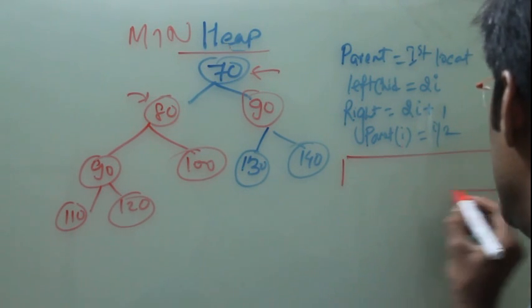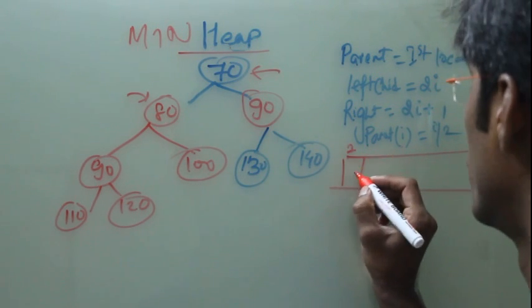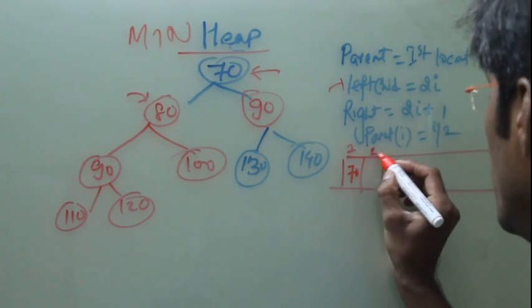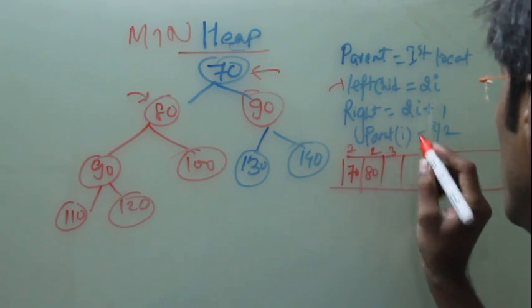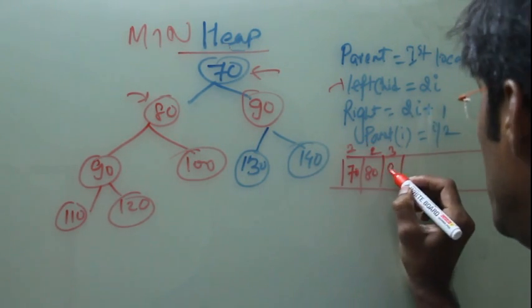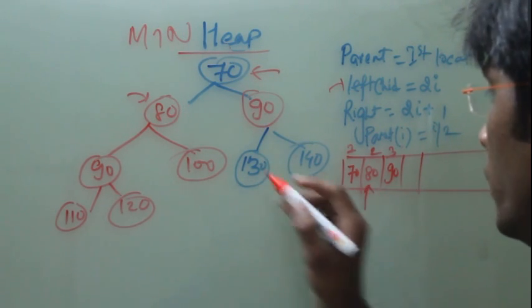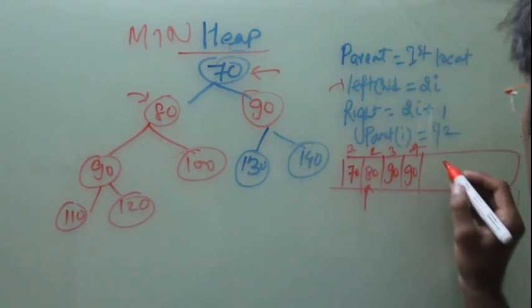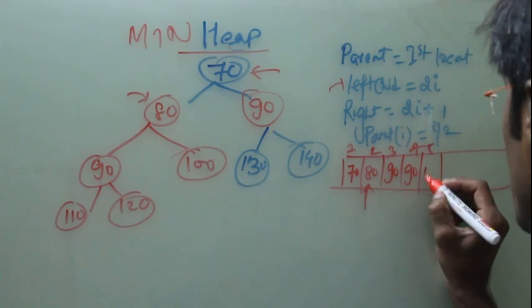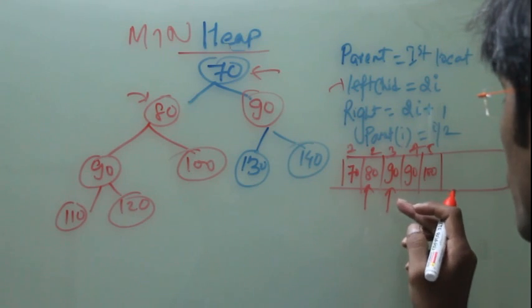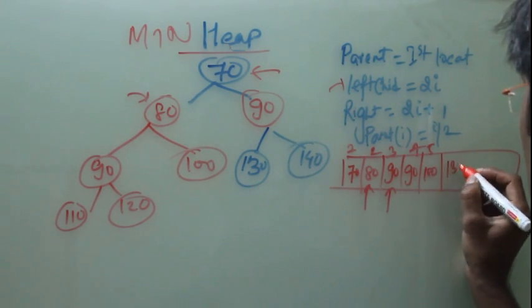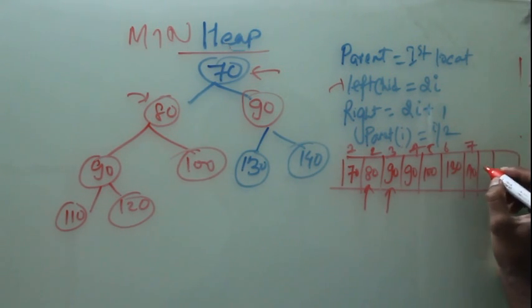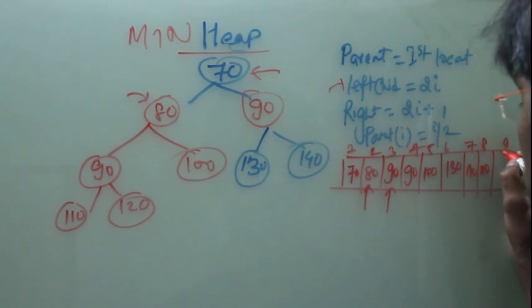So if you draw an array, my first element will be stored as 70. Then I will move to left child, it will be 2 into i, that is 80. Then right child 2 into i plus 1, that is 3, which is 90. Then this will be my next parent. For 80, the left child is the 4th element which is 90, and the 5th element is 100. Now I will move to 90, that's 130 for the 6th element. The 7th element is 140. And the 8th element is 110, and the 9th element is 120.